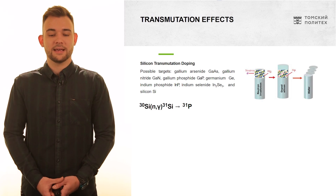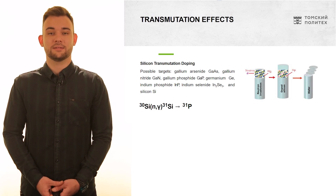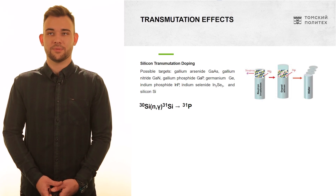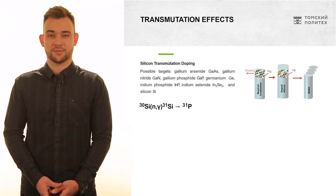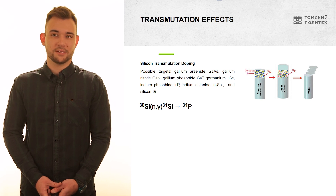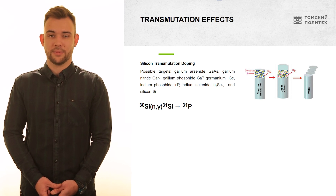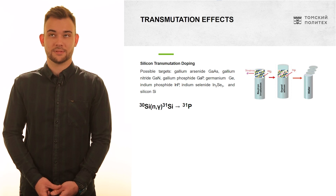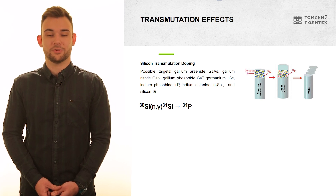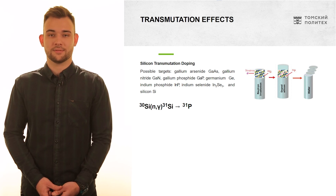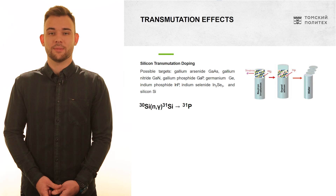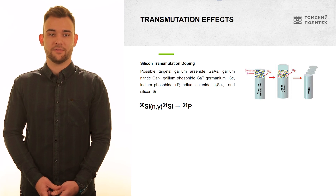The next application is silicon doping. It is done for the purposes of electronics — in particular power electronics, microelectronics, solar batteries, and overall electronics. It's a very useful material and a very useful technique.